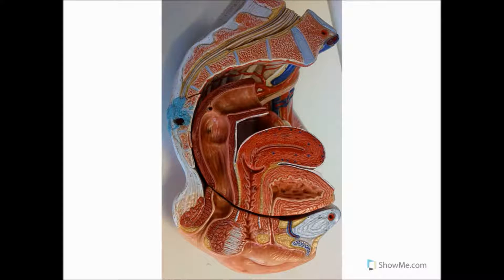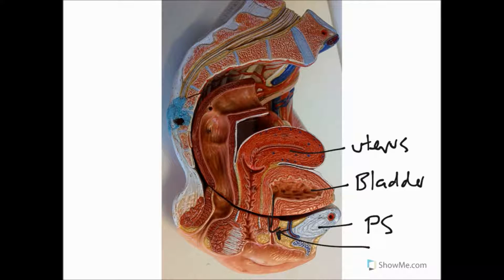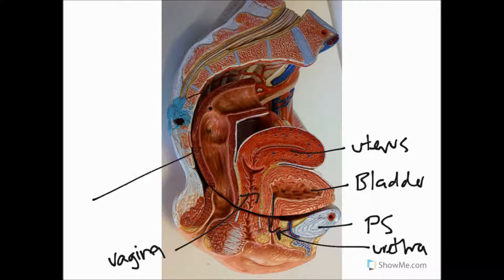Welcome to the show. In this one, we're going to be looking at some of the relationships between female viscera inside the pelvic cavity. To get started, let's first label some of the structures we can see: we've got a pubic symphysis down here, bladder in there, this is our uterus, we've got a urethra coming down here, a vagina in here, our rectum in here, and our anal canal in here.